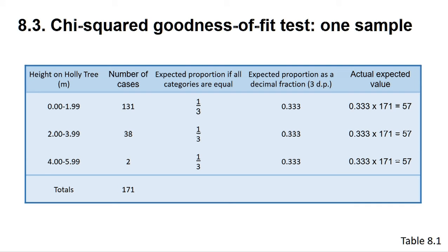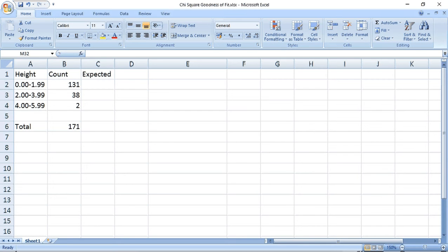What if you do not know what the expected values or proportions are? Then the default position is to expect the same number of cases in each category. This data, taken from table 8.1, shows the number of counts of holly leaf miners at three adjacent height zones on holly trees. There is no prior expectation of what we should find, so we assume we should find equal numbers in each zone. Since we have three categories, we would expect a third of the insects to be found in each zone. So let's do the chi-squared test in Excel when we don't know the proportions for our expected values.